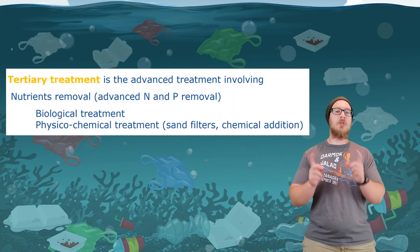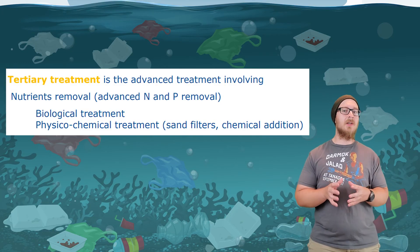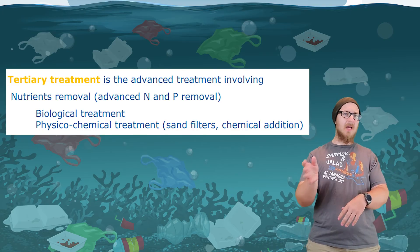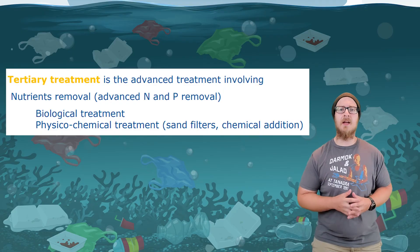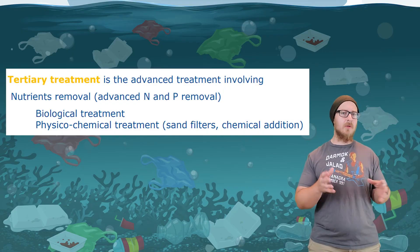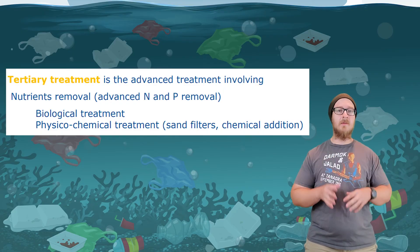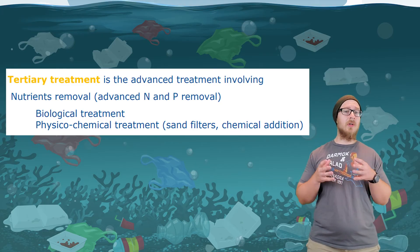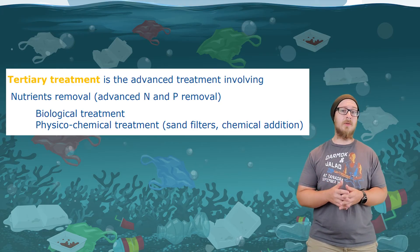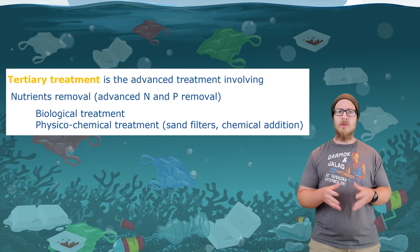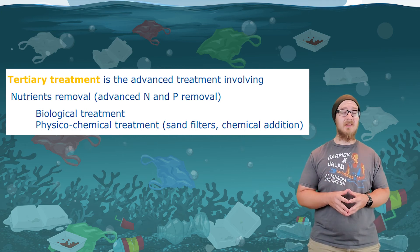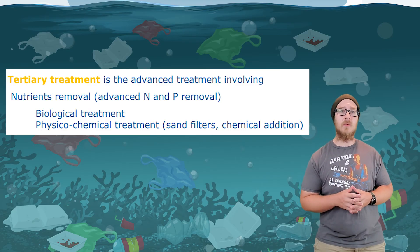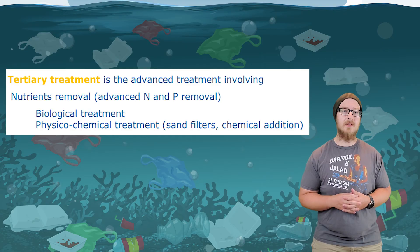The next step is tertiary treatment, where the water is run through a bed of gravel, pebbles, coarse sand, and fine sand, trapping any leftover particulates of many different sizes. In some cases, tertiary treatment also includes allowing water to run through an artificial wetland to remove remaining nutrients like nitrates and phosphates, reducing the risk of eutrophication wherever the treated wastewater is released.